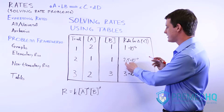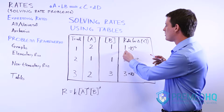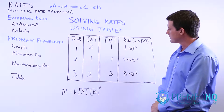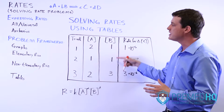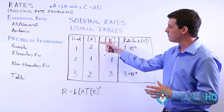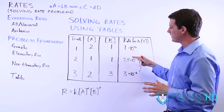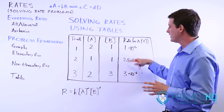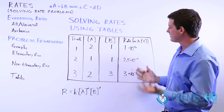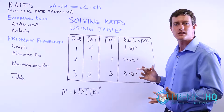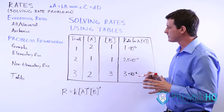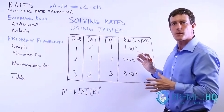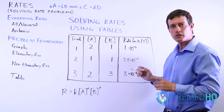10 times 10 to the negative 7 equals 1 times 10 to the negative 6. So between these two trials, as we leave B constant and double the amount of A, we see a four-fold increase — the rate goes from 2.5 times 10 to the negative 7 up to 1 times 10 to the negative 6. When we double the amount of A, the rate quadruples. That means it's second order with respect to A.